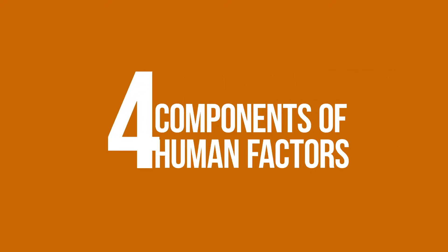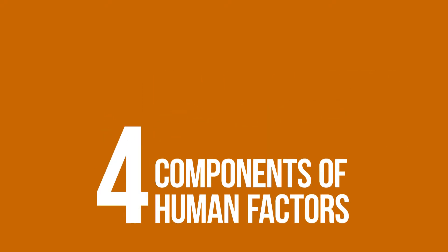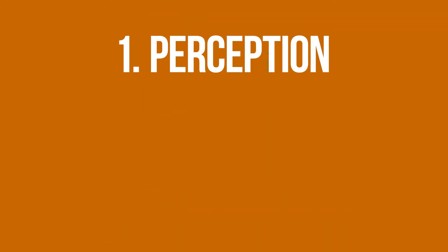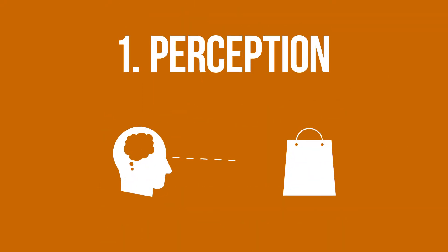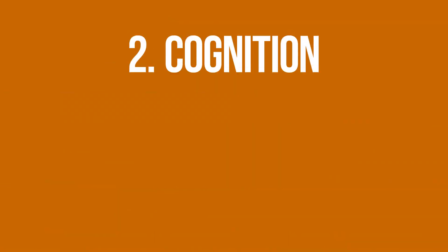In this course, we're going to cover four components of human factors. Perception — what do people look at, and how do they look at things, and why do they look at the things they do? We will learn what influences perception and the methods of increasing shopper behavior to ensure your products and packaging are seen.